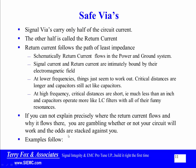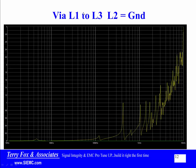Let me give you a couple of examples. Here is a via that goes from layer 1 to layer 3, and layer 2 in this case is a ground plane. The plot runs from 1 megahertz to 10 gigahertz — at 1 MHz it's 0 ohms and at 10 GHz it's 3 ohms.